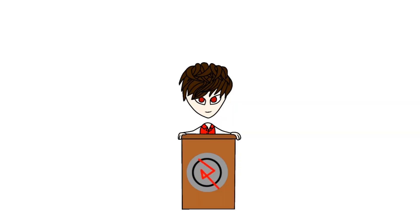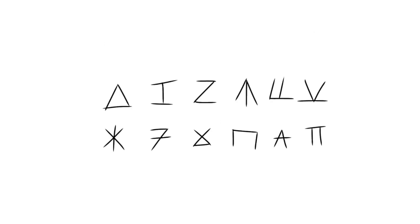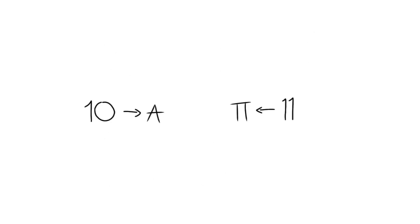An oversimplified explanation for how base 12 works is that, instead of 10 individual numbering symbols — 0 to 9 — there are 12 individual symbols: one for each number up to 9, and then an extra one for 10 and one for 11.